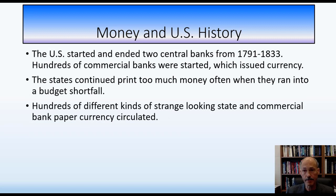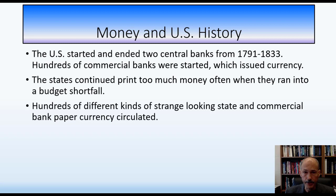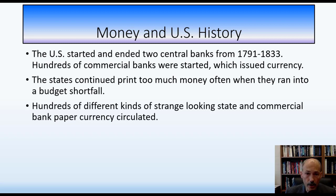To this day there's a dual banking system — a state banking system and a national banking system. The fear of centralized power had its impact: we started two central banks in the late 1700s and early 1800s, each authorized for a 20-year period. In both instances the central bank was allowed to lapse and was never renewed. The first central bank started in 1791 and ended in 1811; the second started in 1816 and lasted until 1833. People just did not trust central banks.